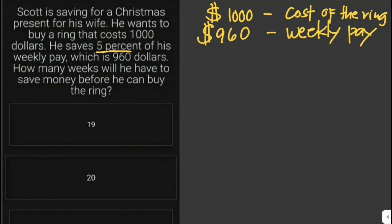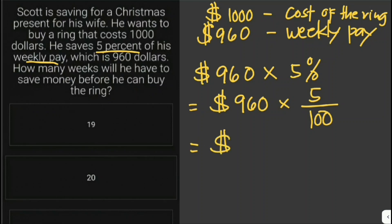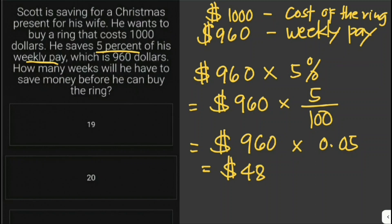He saves five percent of his weekly pay. Five percent of 960 dollars — we can write five percent as five over 100. So he saves 48 dollars every week from his weekly pay of 960 dollars.